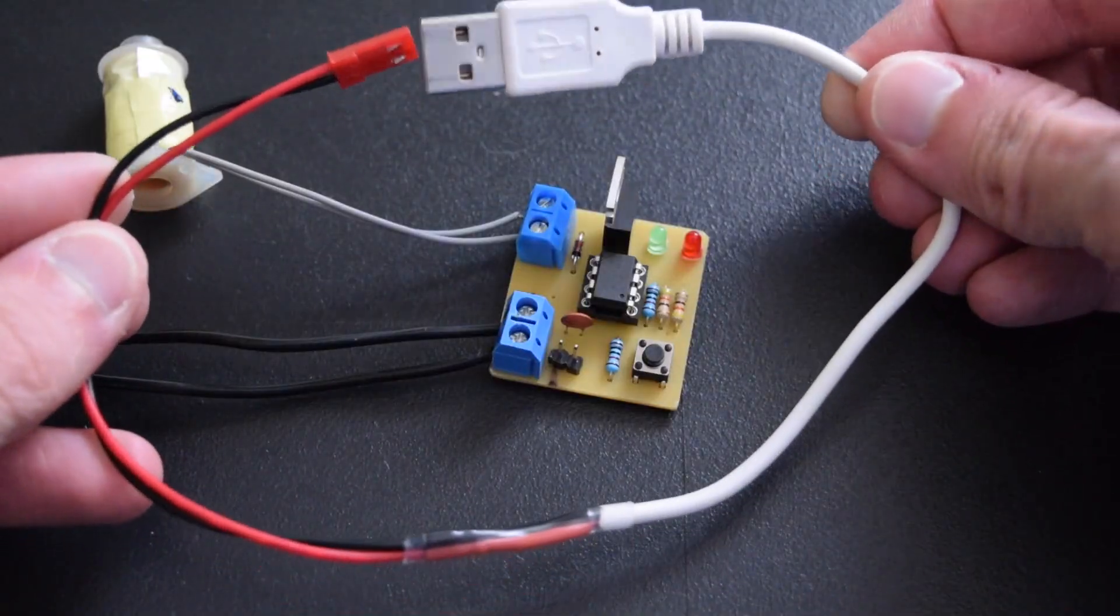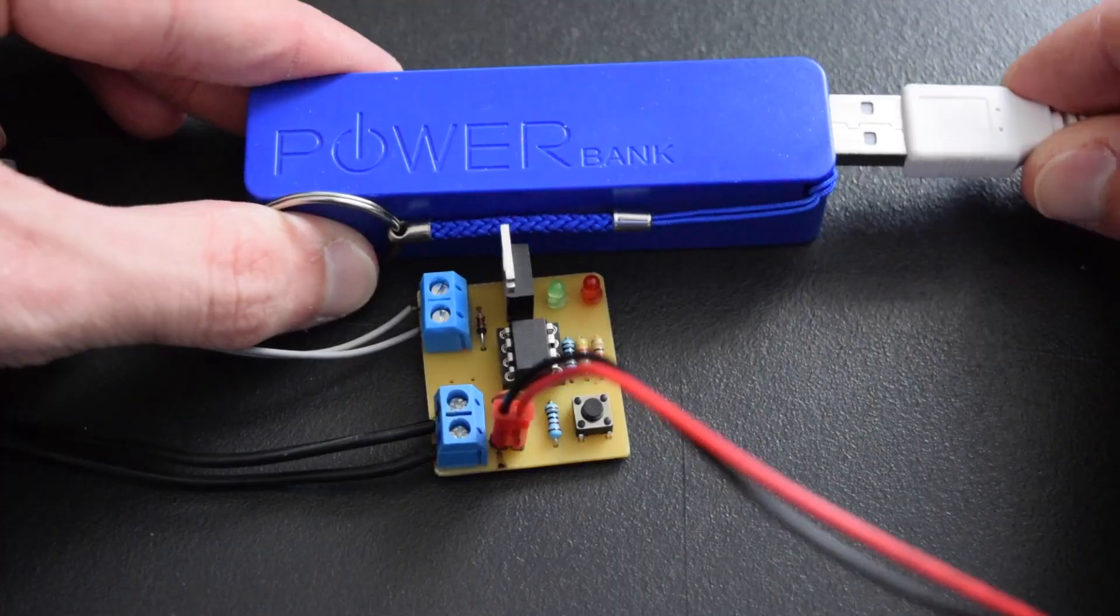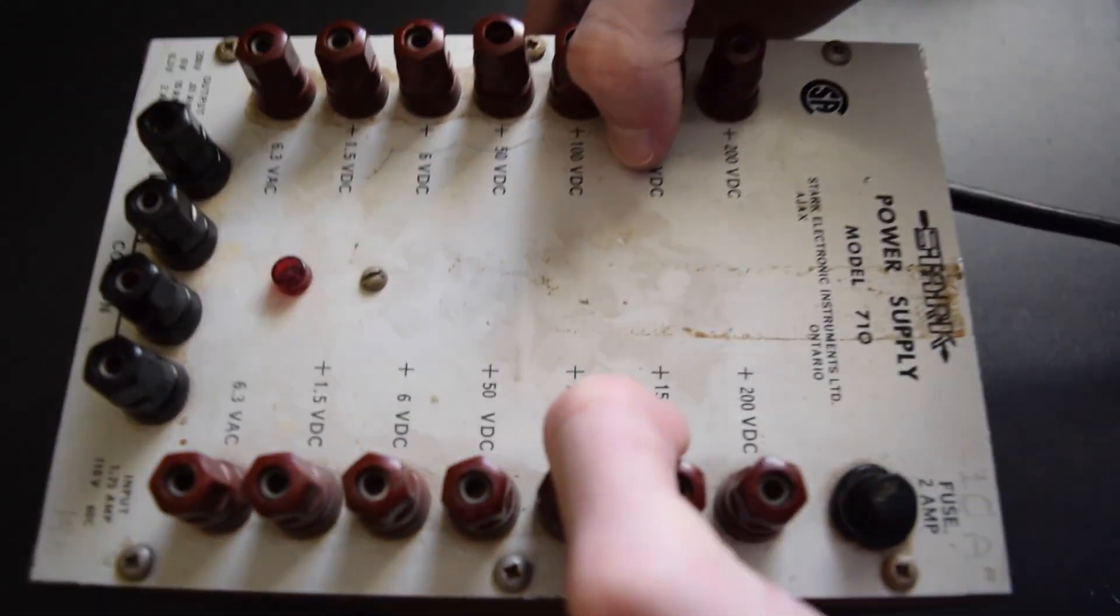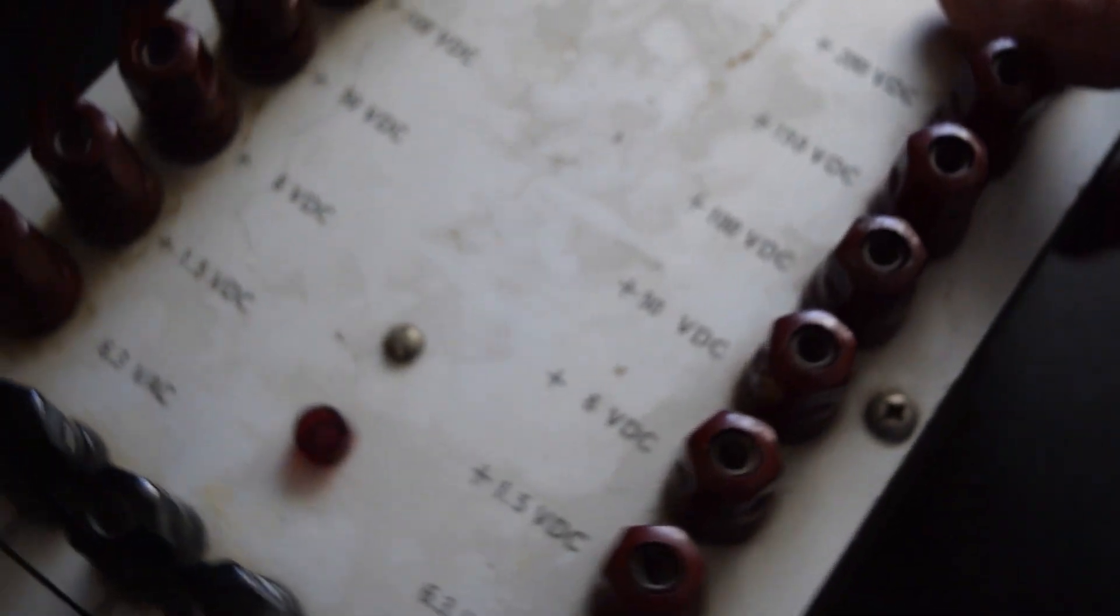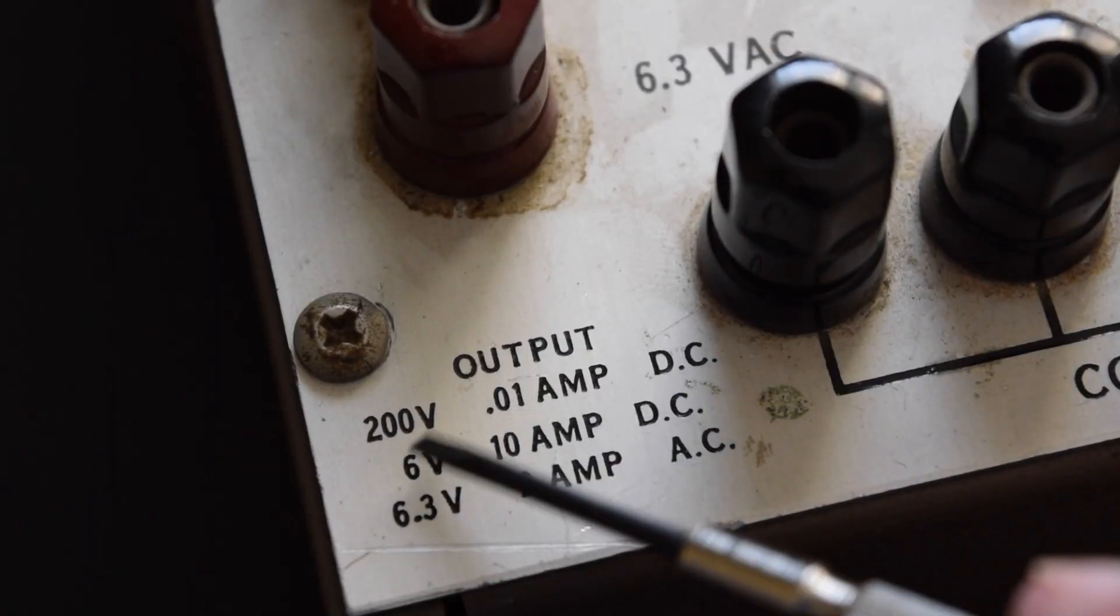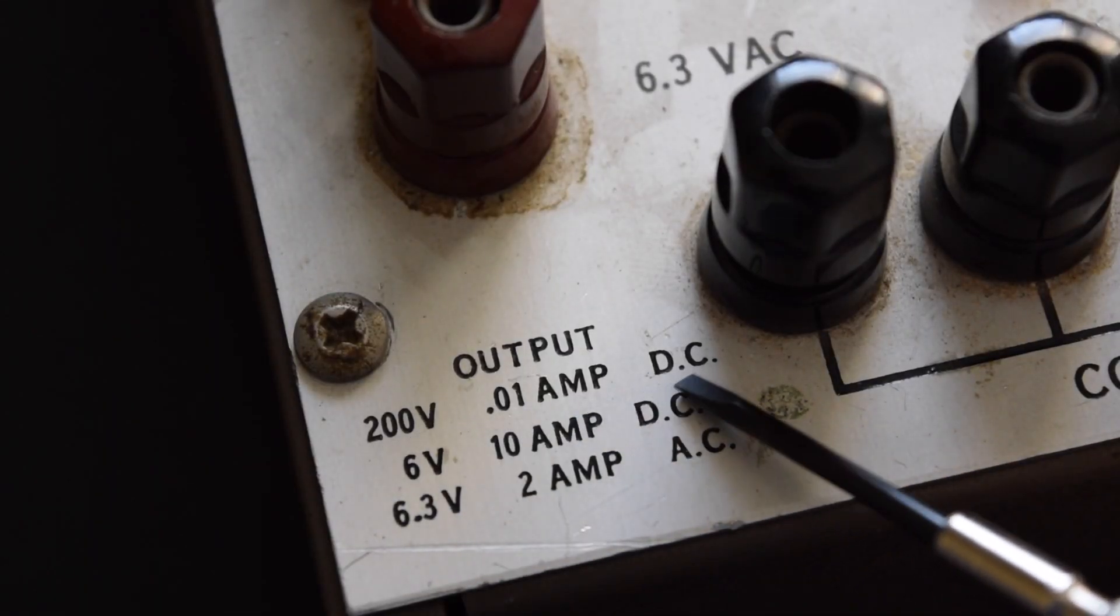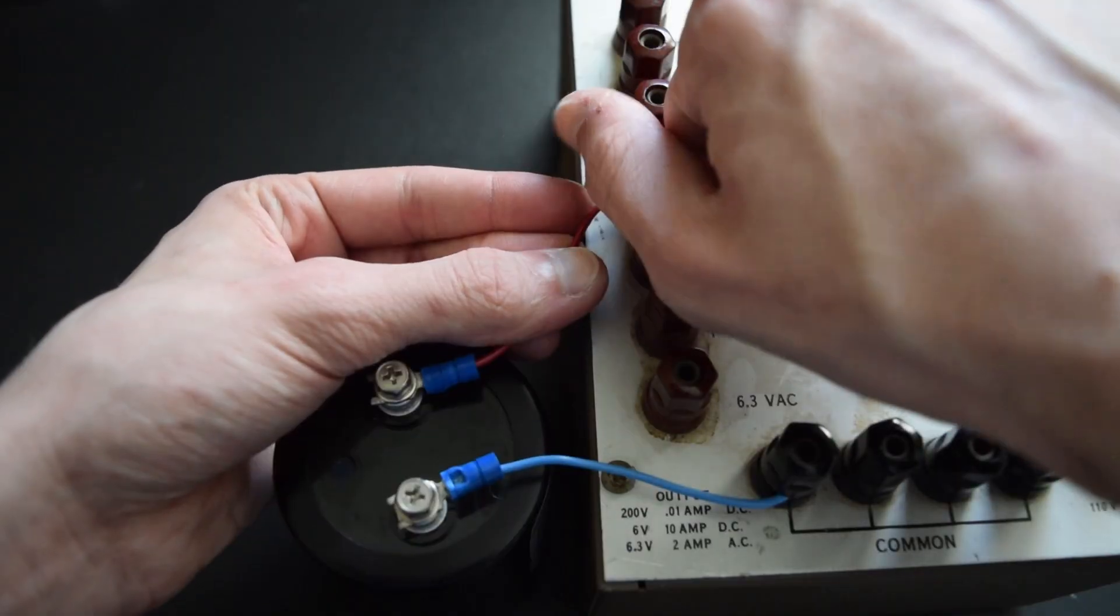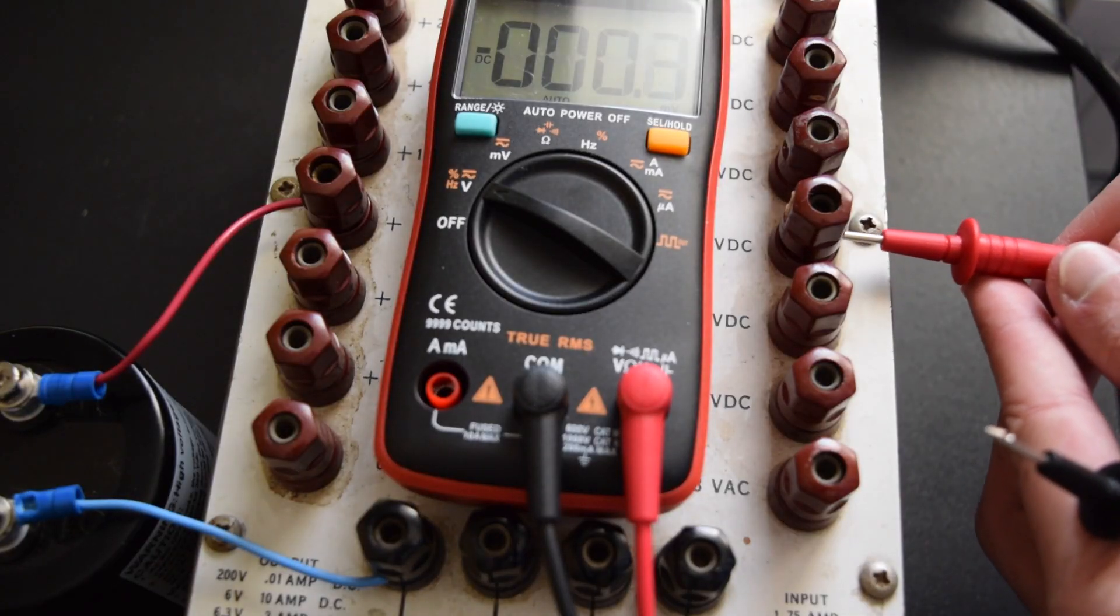Now it's finally time to power the circuit. The microcontroller just needs 5 volts, which I can get over USB, but the coil itself needs a higher voltage, and that's where this power supply comes in. It can't supply very much current though, which is going to be an issue. To solve that, I've got this giant capacitor. By putting it in parallel with the output, it can provide high currents for a short amount of time.